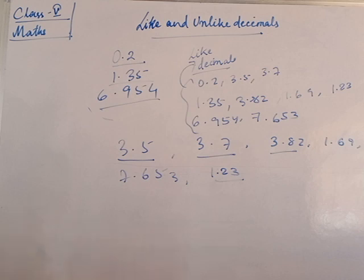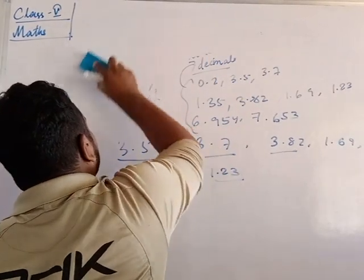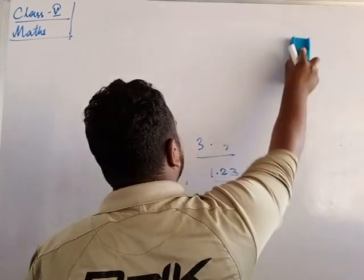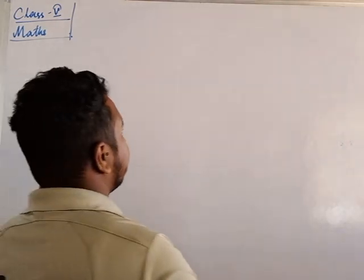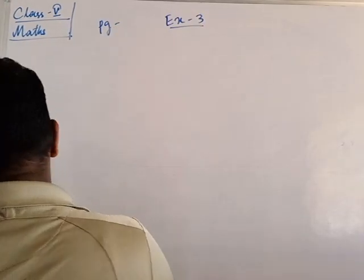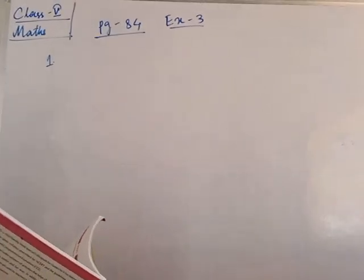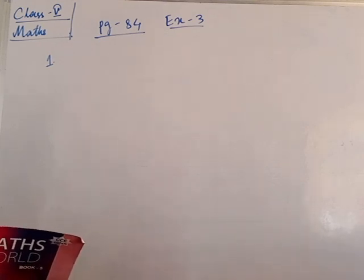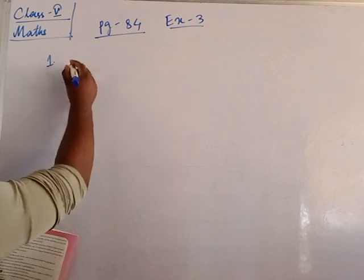Now we will solve Exercise 3. Let me clear the board. Today I'll teach two exercises — you have to complete them. Exercise 3 is on page number 84. The first question says: convert the following groups into like decimals. We have to convert them, so look at how we do the first one.